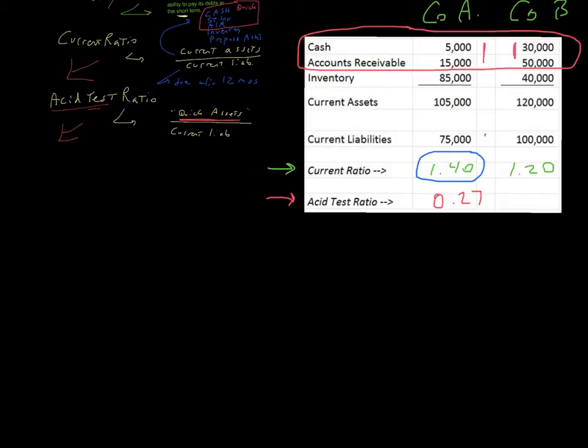For company B, we would take 80,000, these two assets, divided by 100,000 and we would get 0.80. Now, who has the highest acid test ratio? Well, company B wins. Or said another way, if we use the acid test ratio as a means to compute solvency for a company, company B has a better ability to pay its short-term debts.